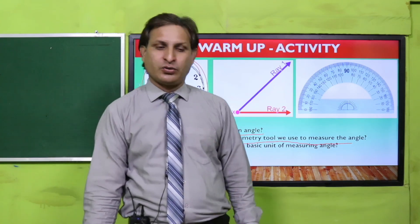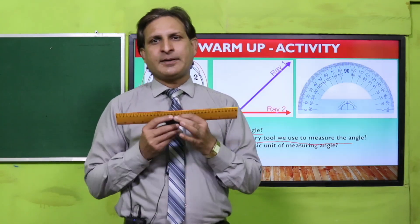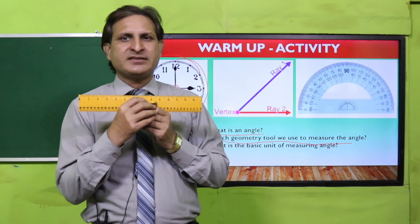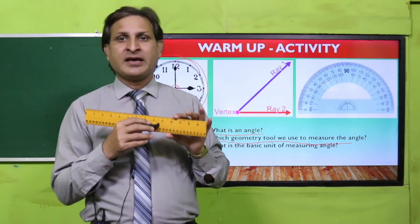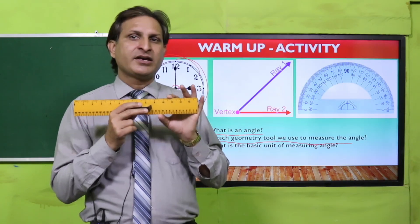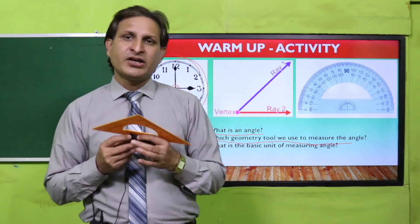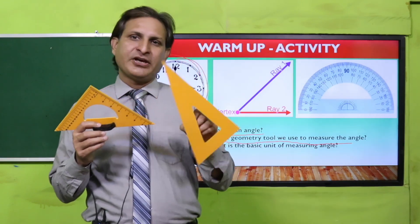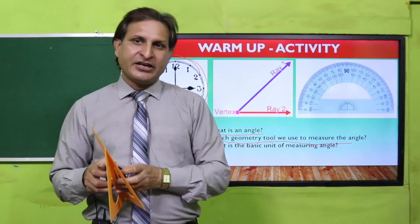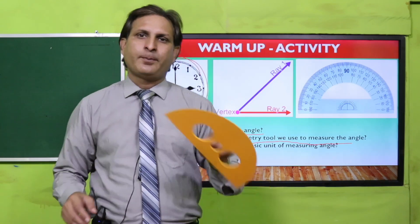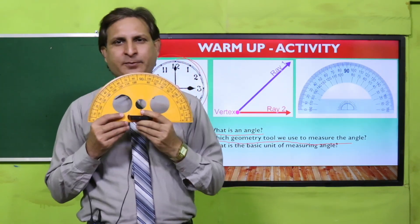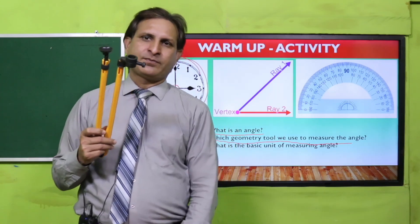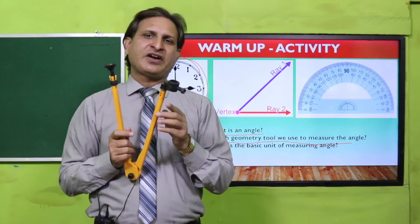Ek cheez aap dekhein — is tarah ka scale aapko nazar aayega aapke geometry box mein. Yeh jo scale hai hum log different types ki measurements centimeter mein measure karne ke liye use karte hain. Yeh bhi aapke geometry box mein available hai. Iske baad yeh hamare paas do triangles hain jinko different types ki measurement ke liye hum log use karte hain. Aur ek aur tool hai jo D-shape ka hai jisko hum protractor kehte hain — yeh bhi aapke geometry box mein available hoga. Iske saath saath ek compass hogi jisme ek side pe needle lagi hogi aur doosri side pe pen use karna hota hai.